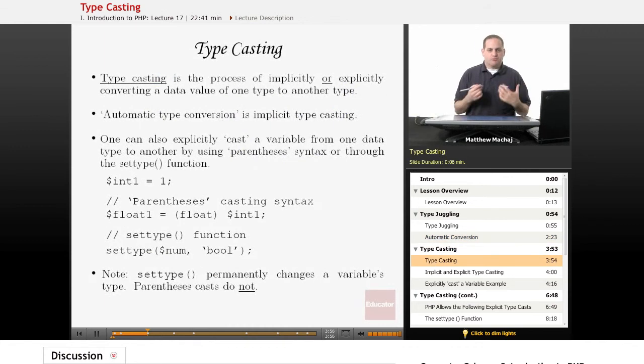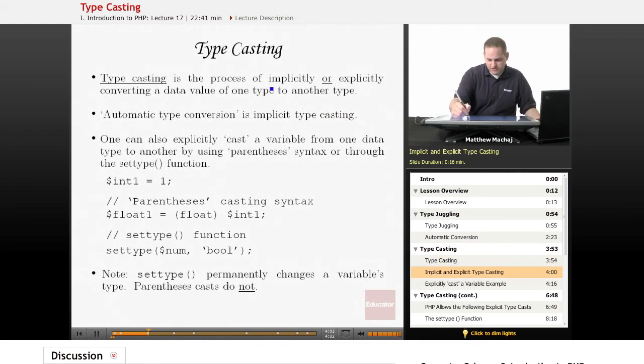So typecasting, as mentioned, is the process of changing a variable from one data type to another data type. This can be either done implicitly, as in automatic type conversion, where PHP converts the data type for you, or you can do it explicitly, where you can explicitly say, I have a variable that's an integer, I want to make it a float.